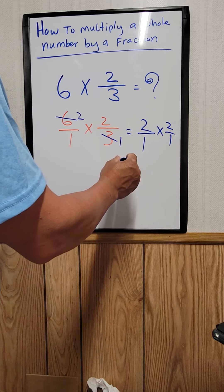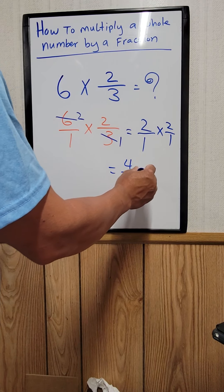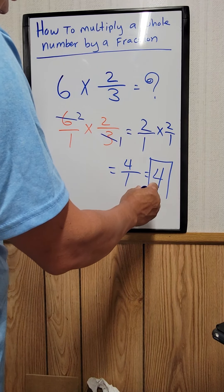So 2 times 2 is 4, 1 times 1 is 1. And then it just equals 4. That's the answer.